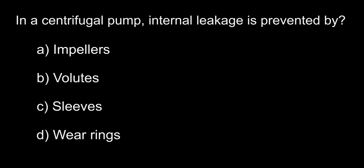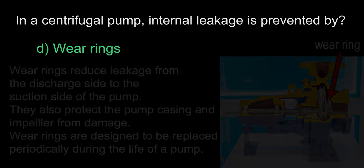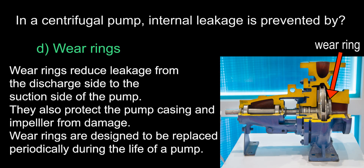In a centrifugal pump, internal leakage is prevented by: A. impellers, B. volutes, C. sleeves, D. wear rings. The answer is D, wear rings. Besides protecting the impeller and pump casing, a very important part of wear rings is to improve pump efficiency. In a centrifugal pump, water from the high-pressure discharge side will want to flow back to the low-pressure intake side — the wear ring helps prevent that. If you notice a pump not performing as well as it used to and there is no other obvious issue, check the wear ring, as they degrade over time and must be replaced with a specific size per the maintenance manual.